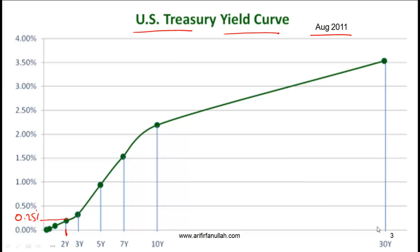The y-axis stands for yield to maturity. So if an investor holds on to a 30-year bond till maturity, then given all the coupon payments and the principal, the yield to maturity is going to be 3.5%. This is the current US Treasury yield curve, and the reason we discuss it first is that most of the spreads we talk about will be with respect to the Treasury yield curve.